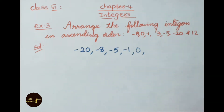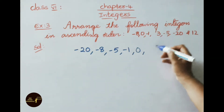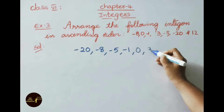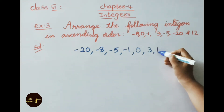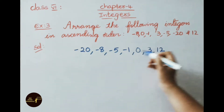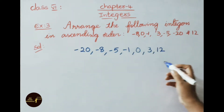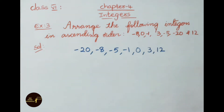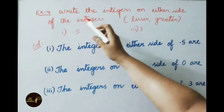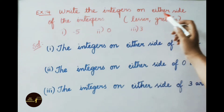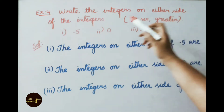Then we arrange the positive numbers from small to big. Here 3 is the smallest positive integer, then 12. So this is the ascending order of the given integers.